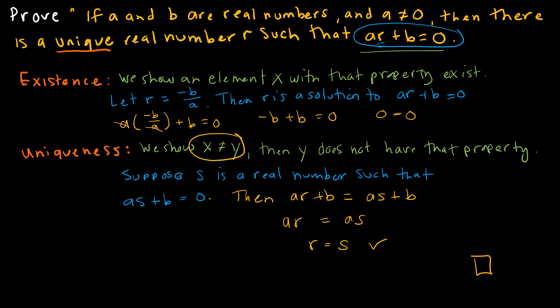Therefore, I have shown that if a and b are real numbers and a does not equal 0, then there is a unique real number r with a value of negative b over a such that ar plus b equals 0.